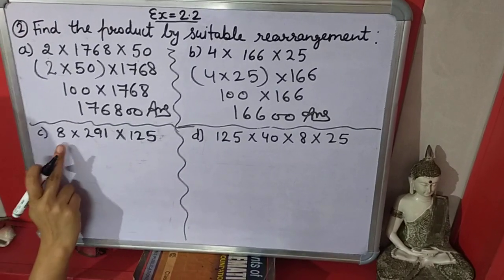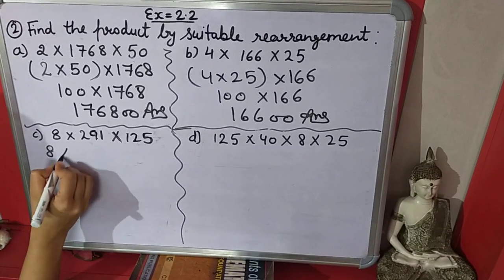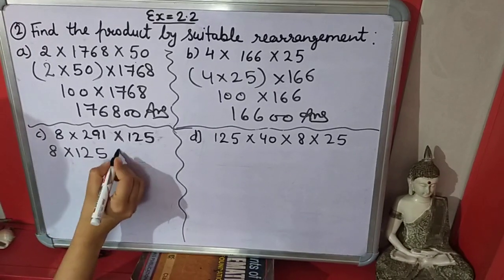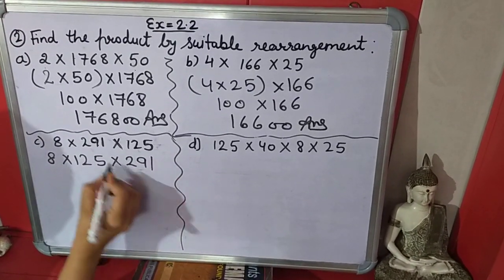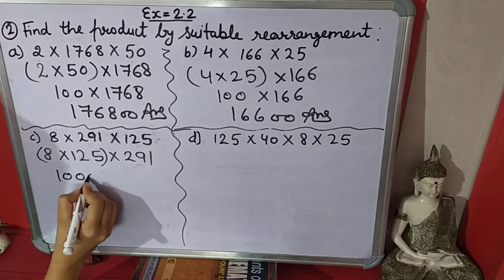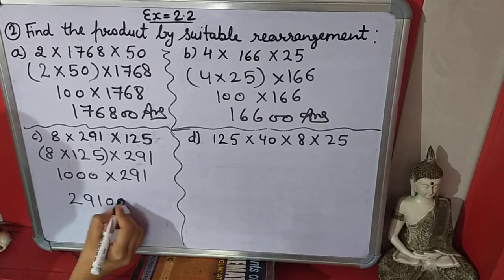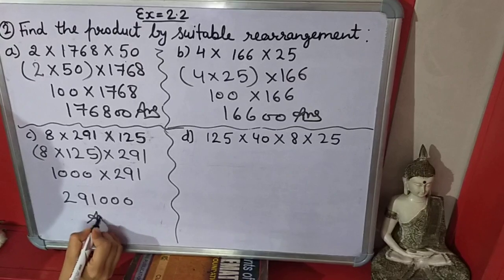In part C again, if I will change the position of these two numbers, 8 times 291 times 125, we can rearrange as 8 times 125 which is 1000. It will be 291,000.